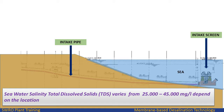Seawater salinity, expressed as Total Dissolved Solids (TDS), varies from 25,000 to 45,000 milligrams per liter depending on the location.